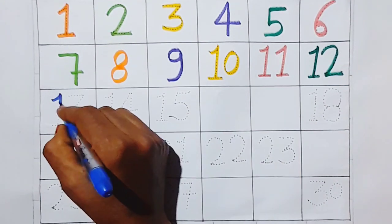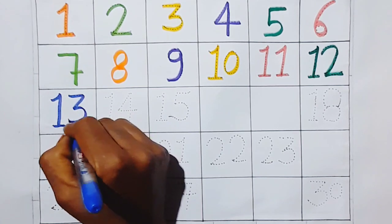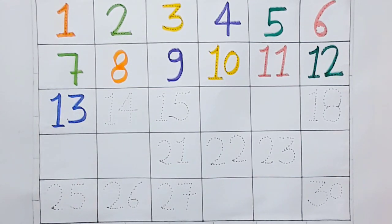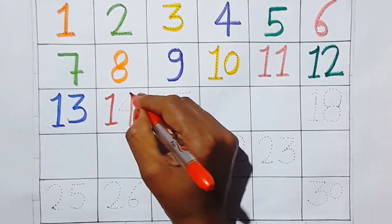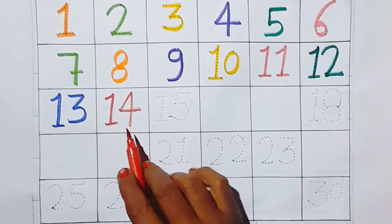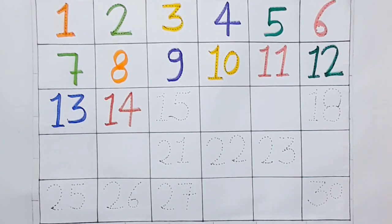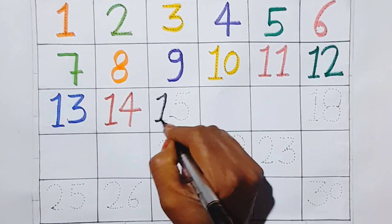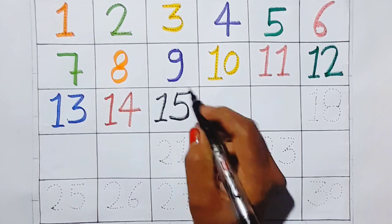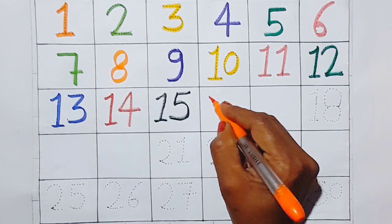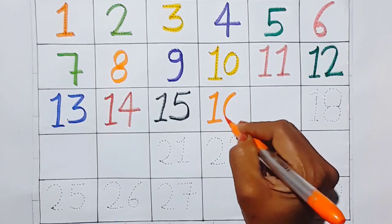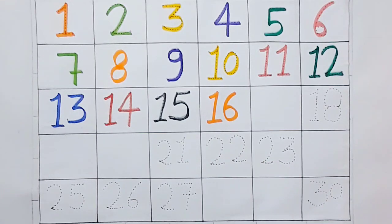Thirteen — this is thirteen. Fifteen, fourteen — this is fourteen. Fifteen — this is fifteen. Sixteen — this is sixteen. Yaar vachyo.